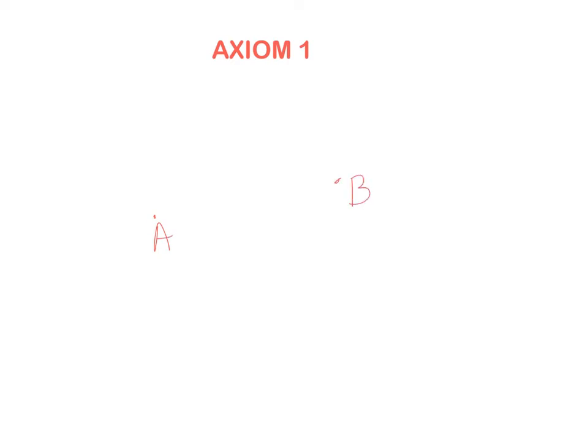We'll focus on four axioms today, talking about points and lines. The first axiom is about two points. Let's mark point A and point B. The question is: how many lines can we draw between points A and B? Exactly one straight line going through A and B. There is exactly one line through any two given points, and we just accept it without any proof.